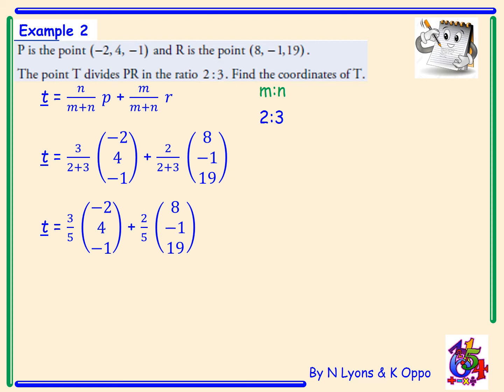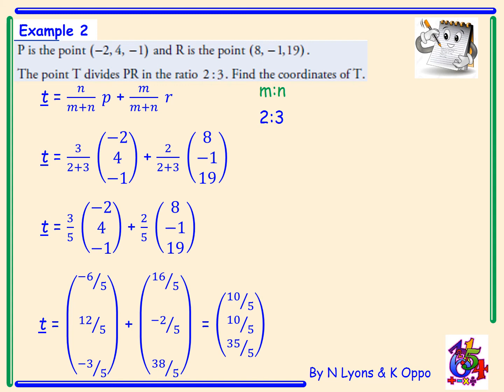The next step will be multiplying each vector by the fraction outside it. This will give us -6/5, 12/5, and -3/5 for 3/5 of P. And 2/5 of R becomes 16/5, -2/5, and 38/5. Combining these vectors together will give an answer of 10/5, 10/5, and 35/5, which cancels nicely to (2,2,7).